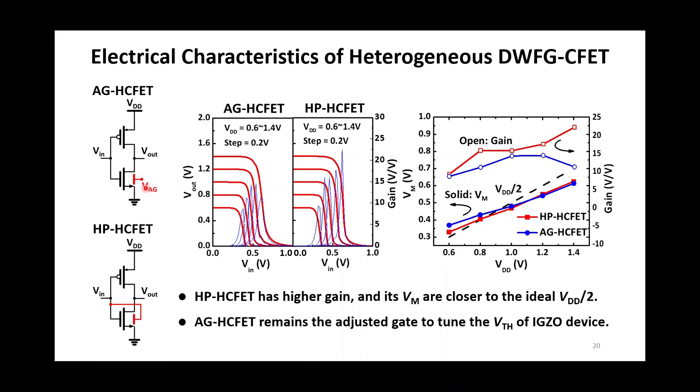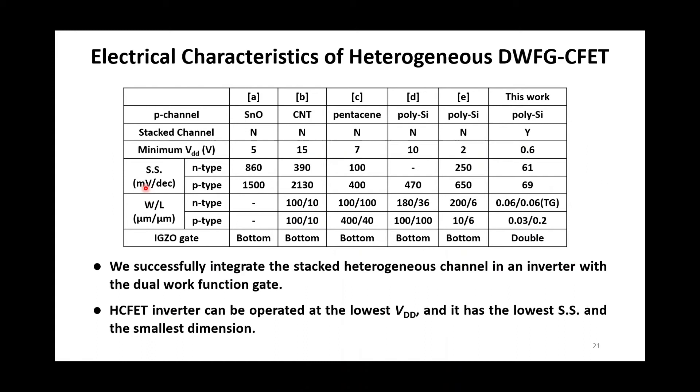Here are the comparison table of the hybrid CMOS. We successfully demonstrate the stacked heterogeneous channel in an inverter with the dual work function gate. And compared to the other hybrid CMOS, our CFET inverter can be operated at the lowest supply voltage and has the lowest swing of P-MOS and N-MOS, the narrowest channel width and the shortest gate length.